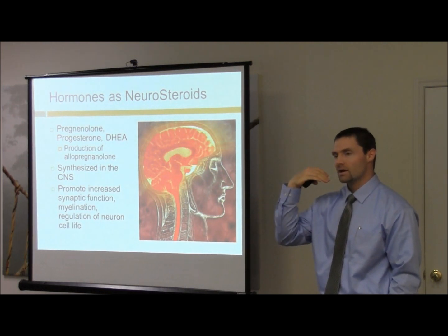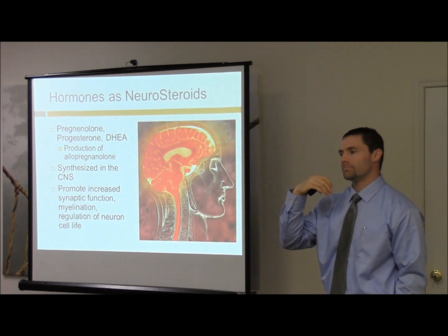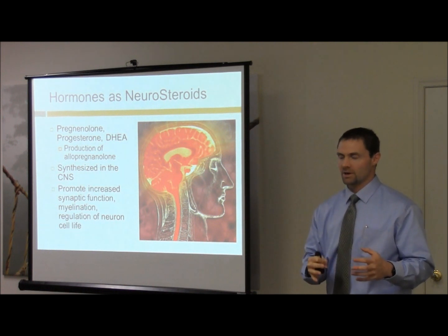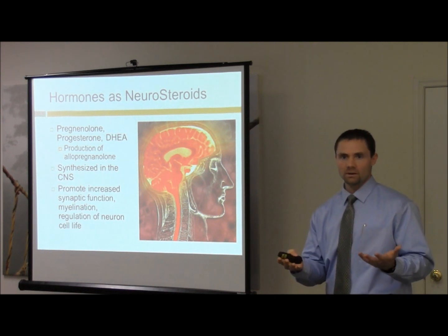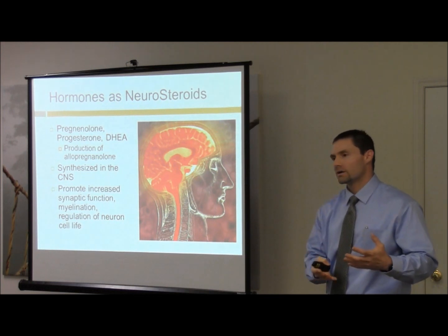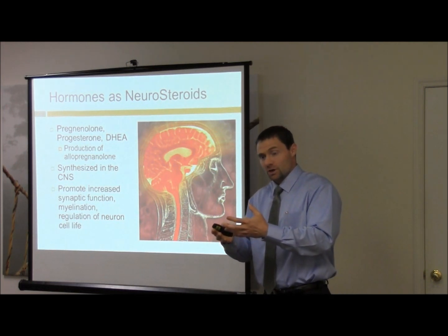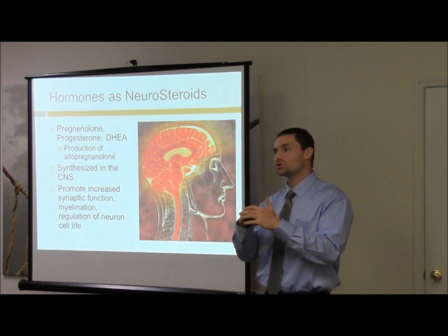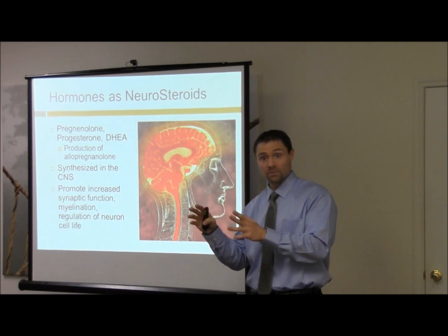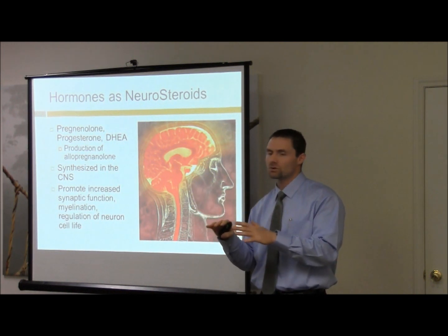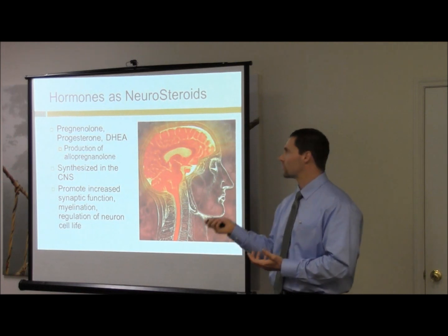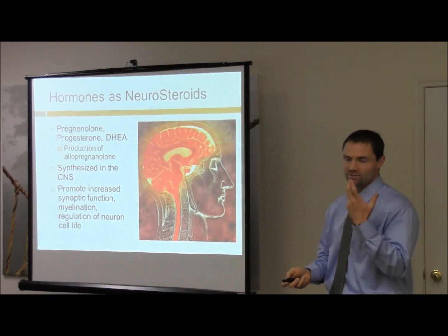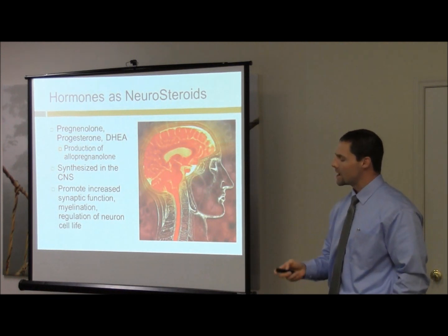Allopregnanolone is an intermediate between these hormones, but it has a physiologic role as well — it actually has a calming role in the brain. For example, with PMS, one characteristic can be irritability. What's happening is estrogen levels are coming up, and if you don't have the balance of progesterone to compensate, you get too much neurological excitability. You don't have the calming nature of progesterone to offset that, and it's really these metabolites that are stimulating those neuroreceptors.